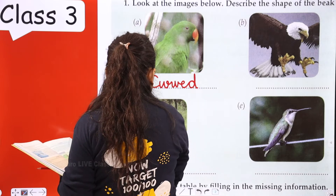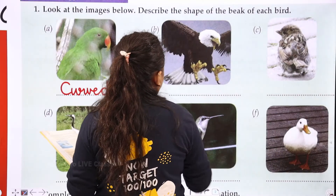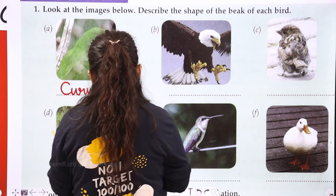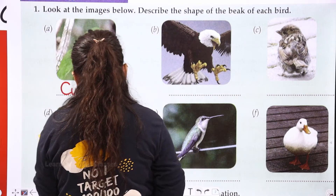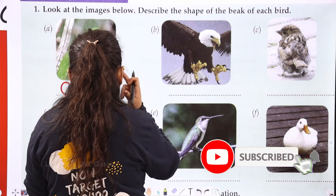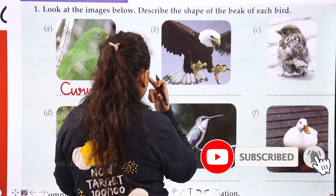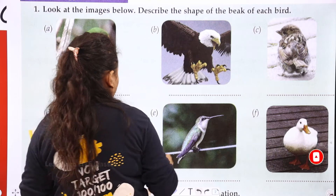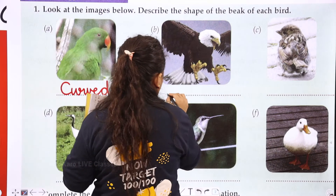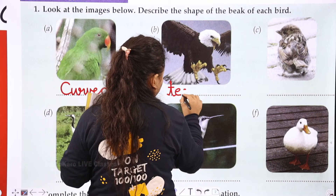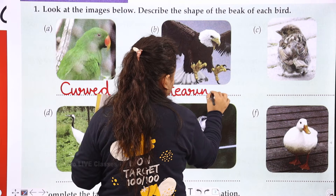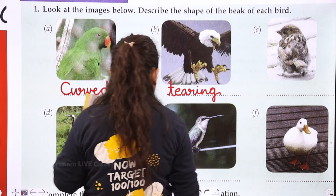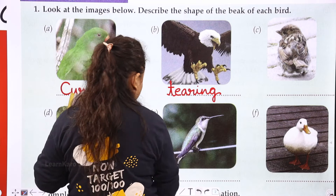The second bird is an eagle. The shape of the beak of the eagle is a tearing beak.